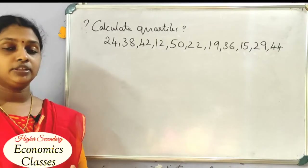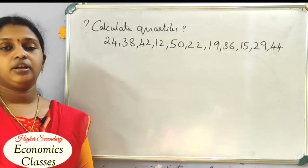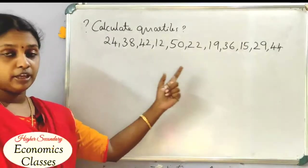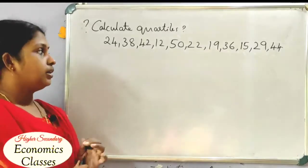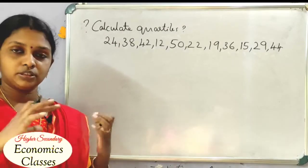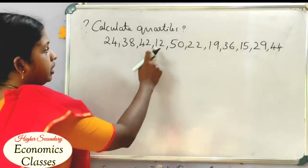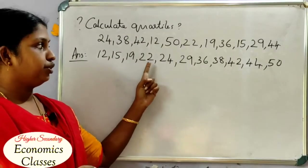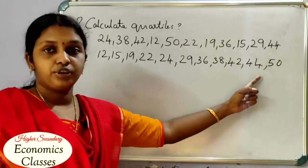What we are doing is finding the median, Q1, and Q3 for an individual series. The values are arranged in ascending order: 12, 15, 19, 22, 24, 29, 36, 38, 42, 44, 50. This is the first step.